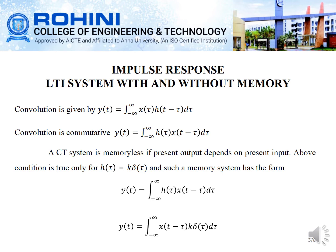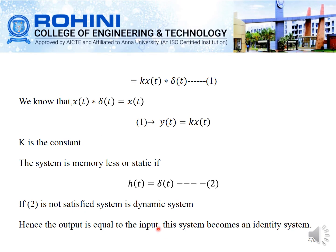A continuous time system is memoryless if the present output depends on the present input only. This condition is true only when h(tau) equals k times delta(tau). Such a memoryless system has the form y(t) equal to the integral of h(tau) times x(t minus tau) d tau. Substituting h(tau) equal to k times delta(tau), we get y(t) equal to the integral from minus infinity to infinity of x(t minus tau) times k times delta(tau) d tau.